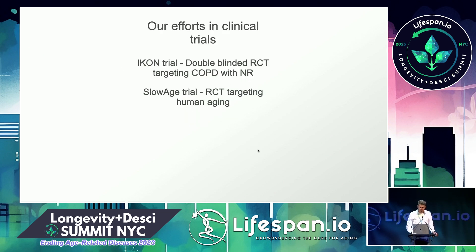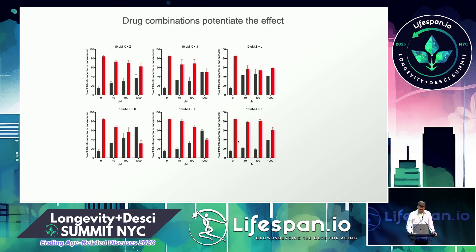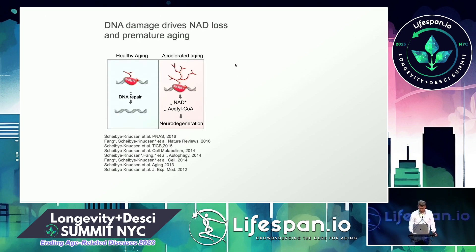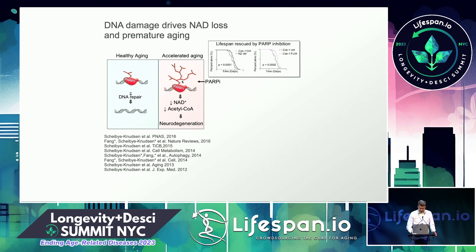I'll briefly describe our clinical trials work. The ICON trial is a double-blinded RCT targeting chronic obstructive pulmonary disease — smokers' lung — using NR. This is interesting because DNA damage can drive loss of NAD and premature aging. Smoking induces DNA damage and inflammatory responses in the lung, and NAD loss is largely driven by the DNA damage response enzyme PARP1 consuming NAD.